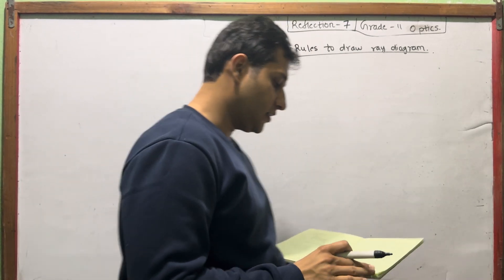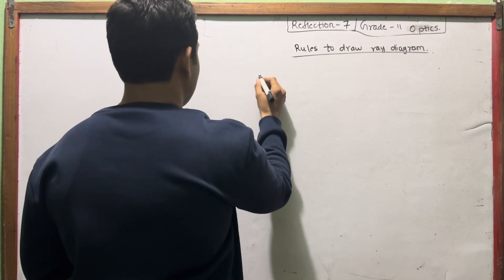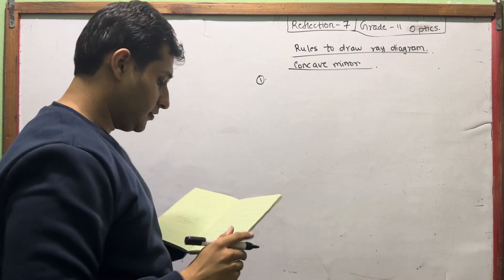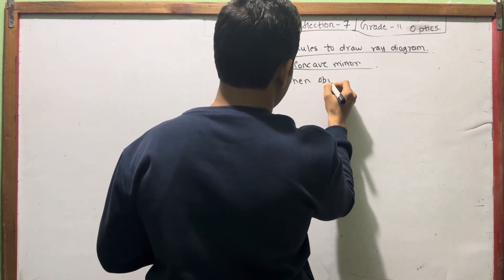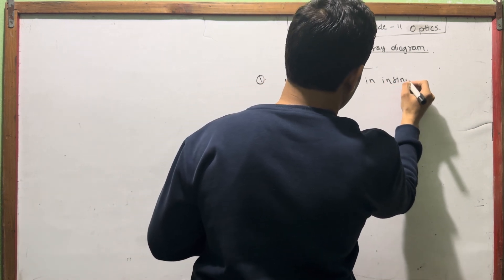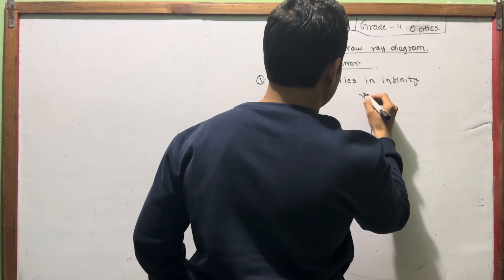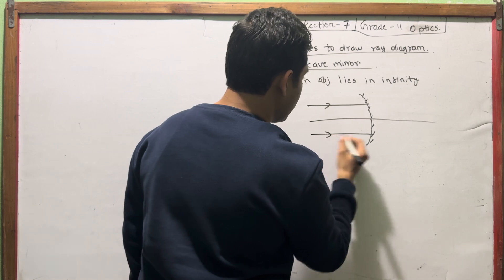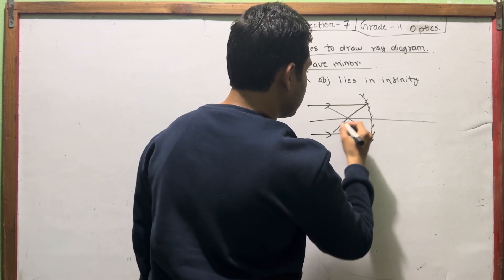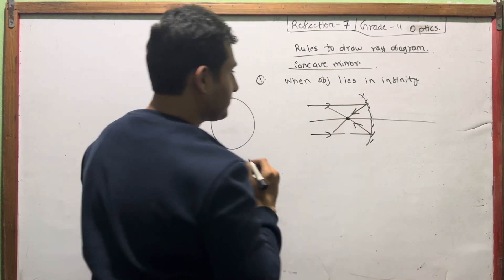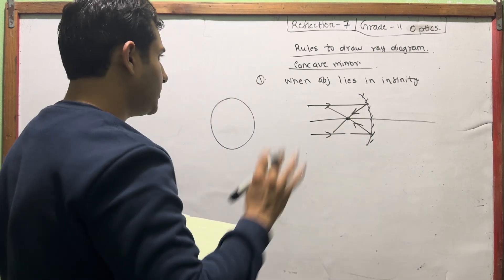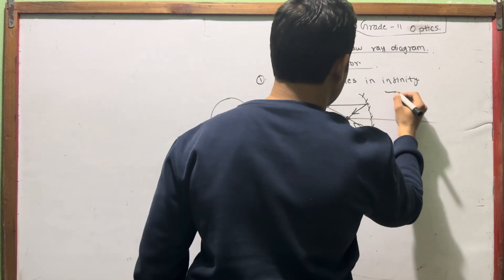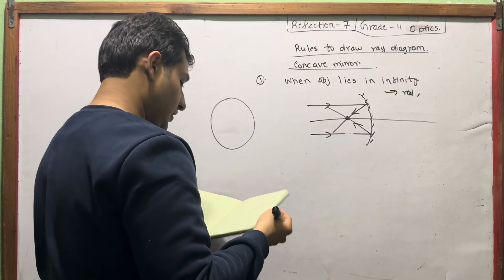So, first one — number one. Some concave mirror, some convex mirror. When object lies at infinity, the object is parallel. Three things, very simple. The image is real — it is real.